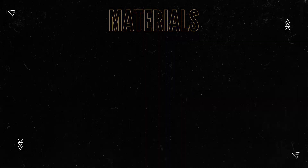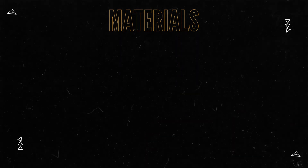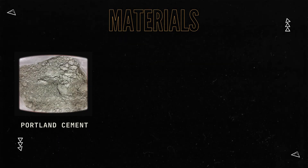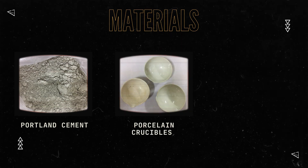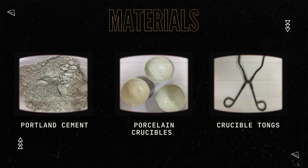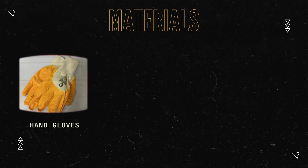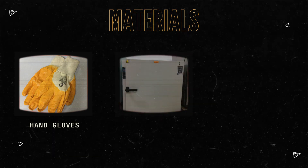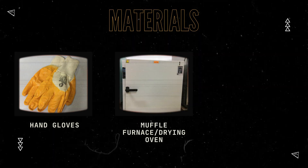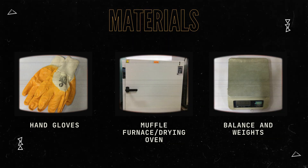Let us proceed to the materials needed in our experiment. First is the Portland cement, porcelain crucibles, crucible tongs, hand gloves, muffled furnace or drying oven, and lastly, balance and weights.